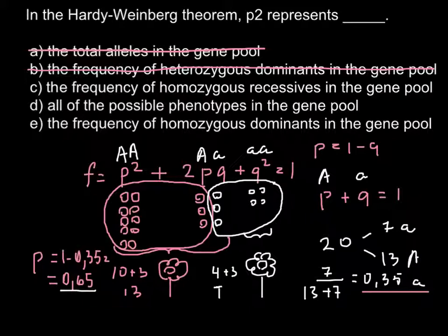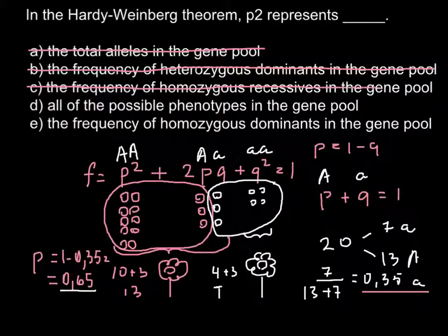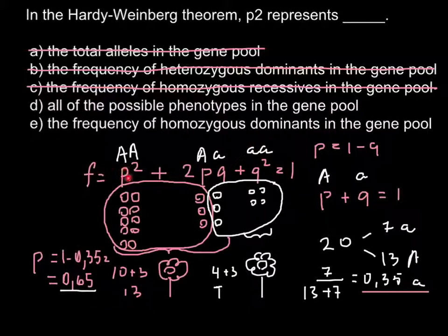Answer C: the frequency of the homozygous recessive in the gene pool. As we see in the formula, q-squared stands for the homozygous recessive — so this doesn't answer our question. Cross it out. Answer D: all the possible phenotypes in the gene pool. We have two phenotypes and three genotypes, and p-squared stands for homozygous dominant, not the number of phenotypes. So we cross out this answer too.